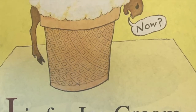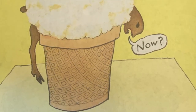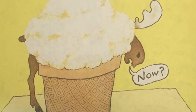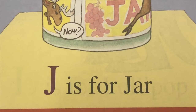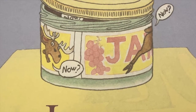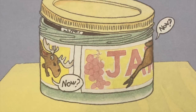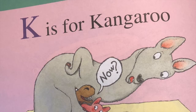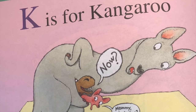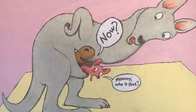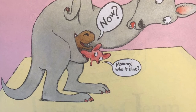I is for ice cream. No! J is for jam. No! No! No! K is for kangaroo. No! Mommy, who's that?